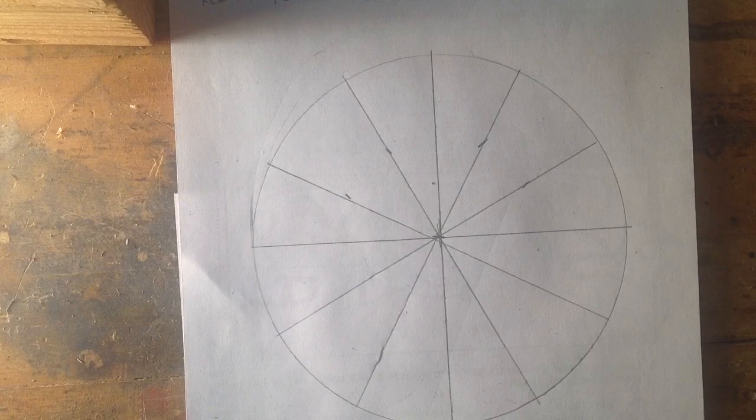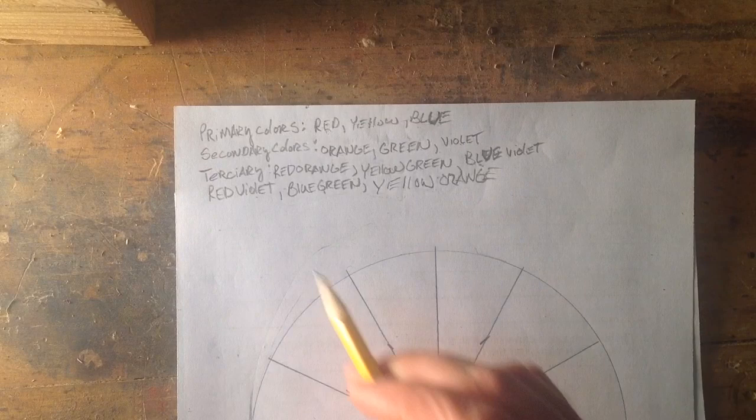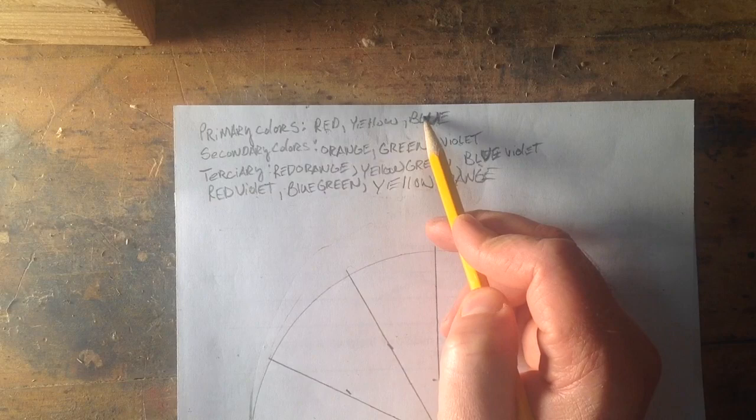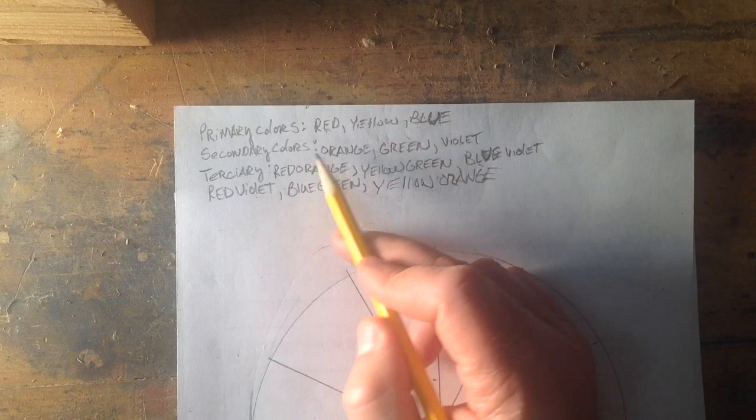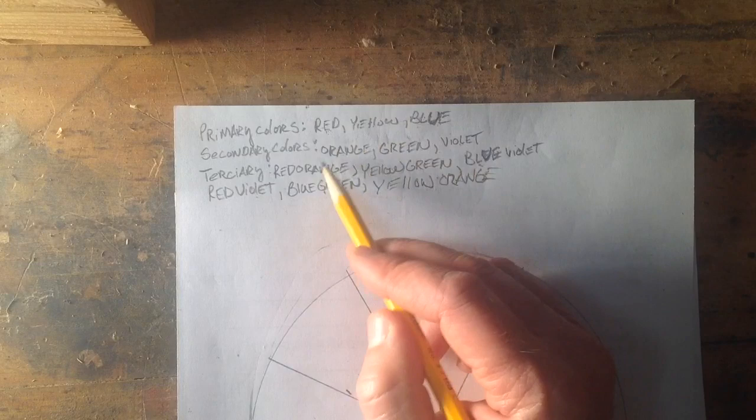First what I want to do is go over the colors that we're going to incorporate into this wheel. I'm going to start with our primary colors. Our primary colors are red, yellow, and blue. Red, yellow, and blue are primary colors because you need them to mix up all your other colors. You can't mix any of the other colors together and get red, yellow, and blue. You've got to have those before you mix the other colors up.